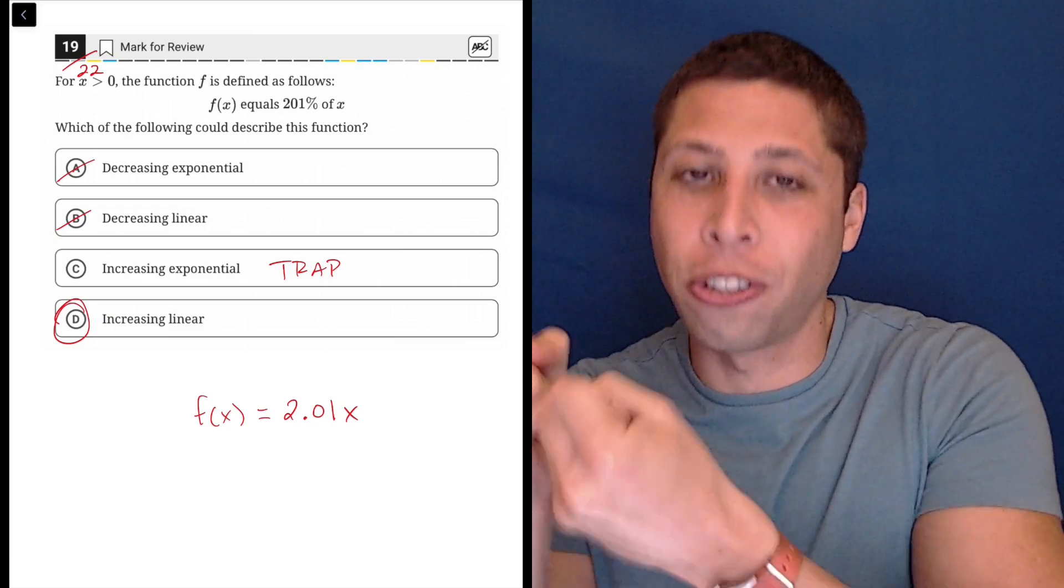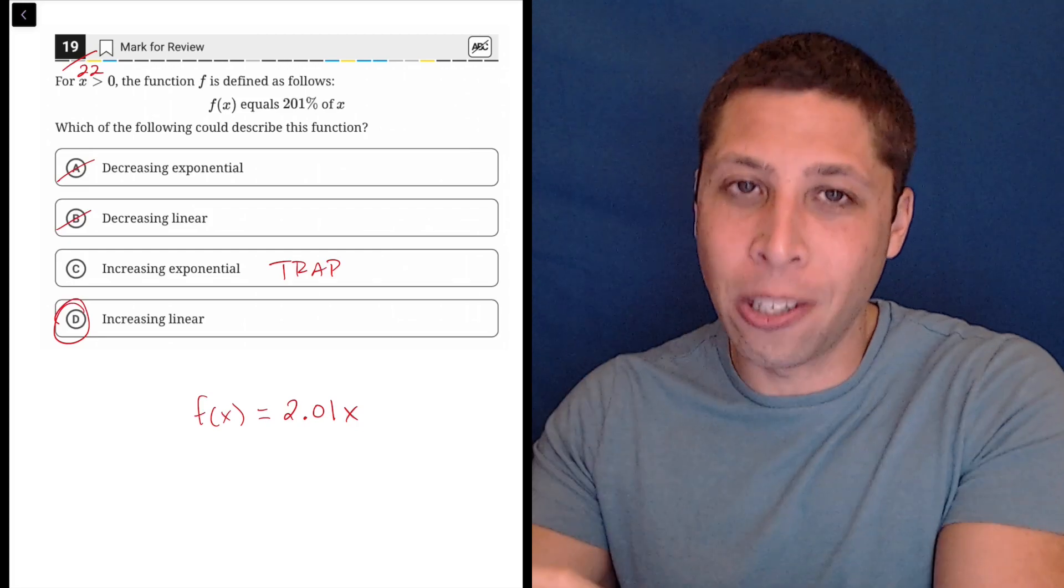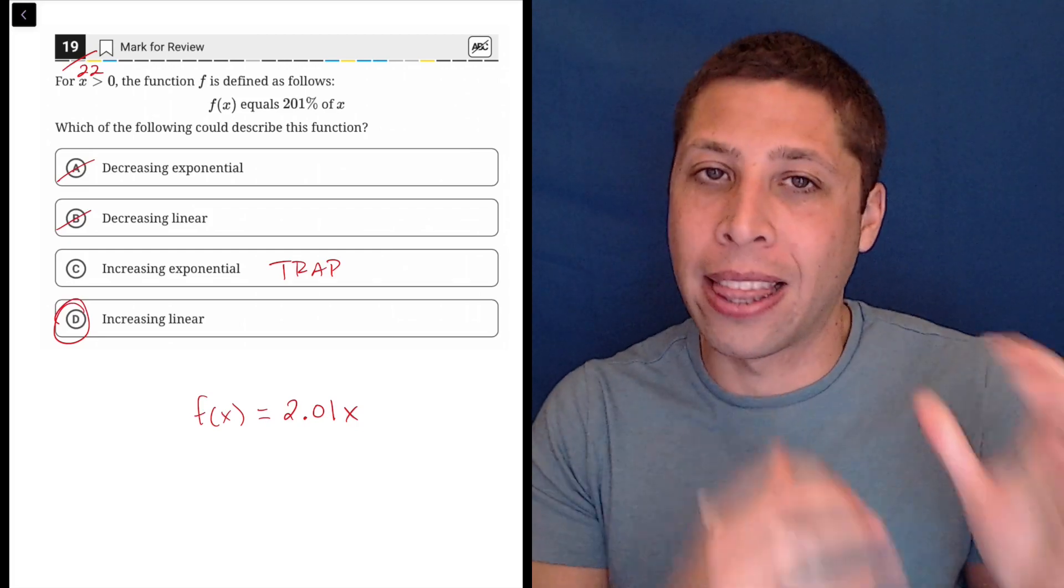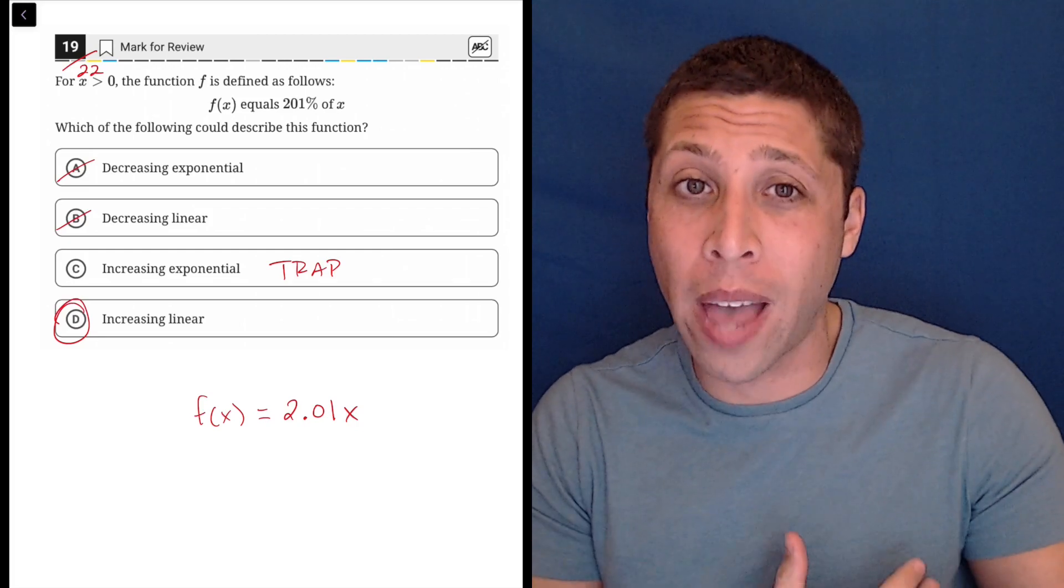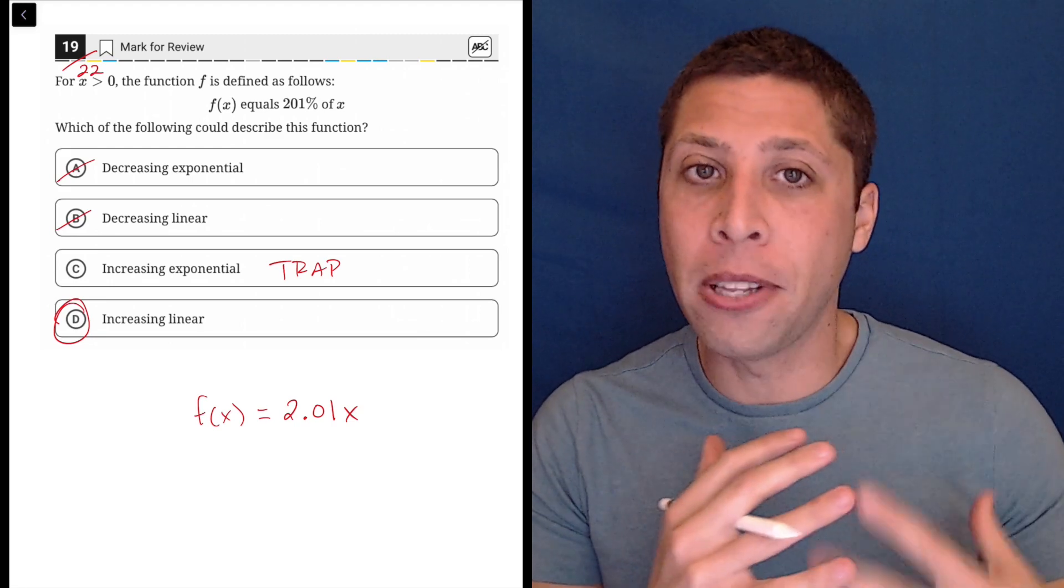They're being led in a certain direction by the SAT, and they have an impulse to continue in that direction. They can't pull back and think about the question numbers. So try to do that as you get to these harder questions later in the sections that there might be these traps.